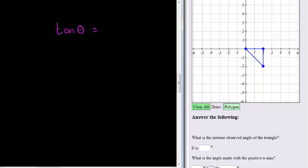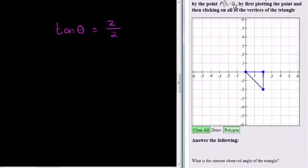Opposite is easy, that's just y, and the other one is x. So it's 2 over 2. Now you'll see I didn't use negative 2, and that's just because I want just this inside angle. I don't need to be using negative values to work out that inside angle.